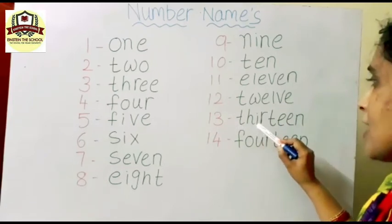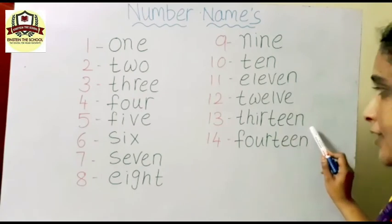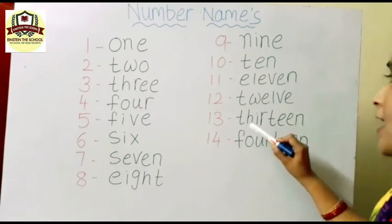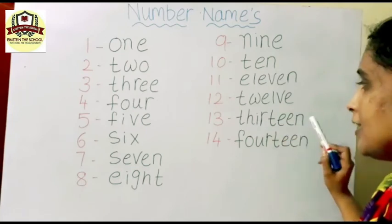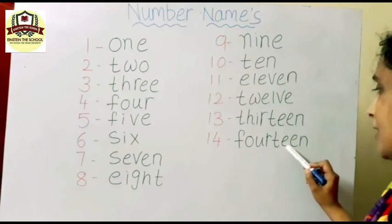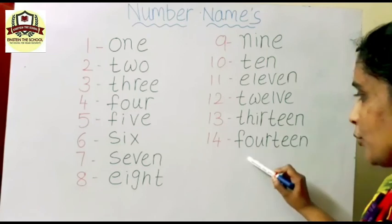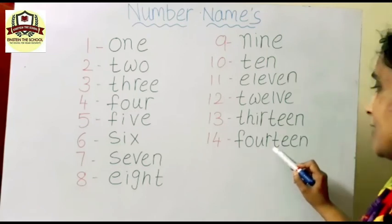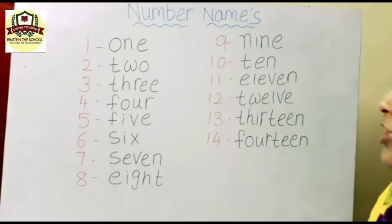T-H-I-R-T-E-E-N, 13. T-H-I-R-T-E-E-N, 13. F-O-U-R, 4, T-E-E-N, 14. F-O-U-R, 4, T-E-E-N, 14. Understood children?